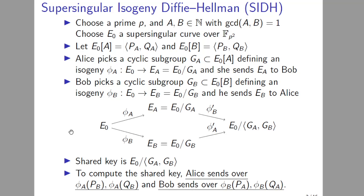They want to compute the common shared secret, which is E_0 over G_A and G_B. But just knowing the codomain of the other's secret isogeny is not enough to compute this shared secret, so both have to send over some extra information. Namely, Alice sends over φ_A(P_B) and φ_A(Q_B), where P_B and Q_B generate the B-torsion, and Bob sends over φ_B(P_A) and φ_B(Q_A), where P_A and Q_A generate the A-torsion.